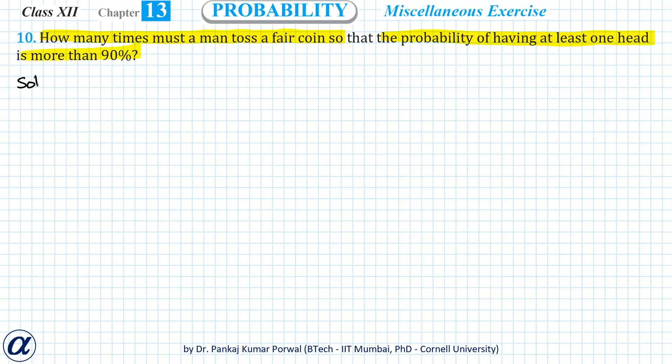This is a binomial probability problem, but in this case the total number of trials is unknown. We want to find the total number of trials so that the probability of having at least one head is more than 90%, or in probability terms, more than 0.9.